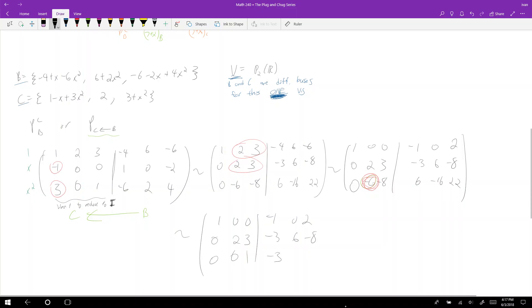Negative 16 plus three times row two, so that's 2. And then I get 22 plus negative 24, so negative 2.